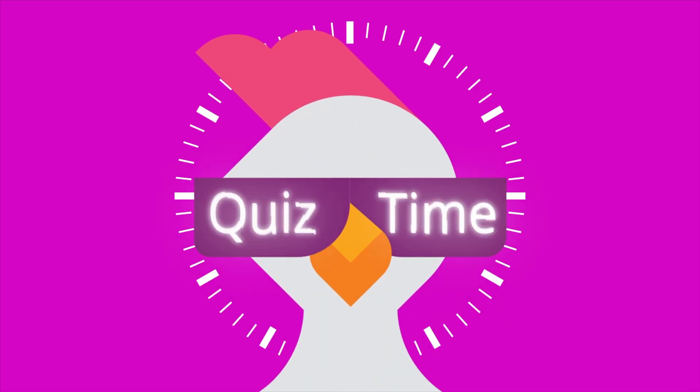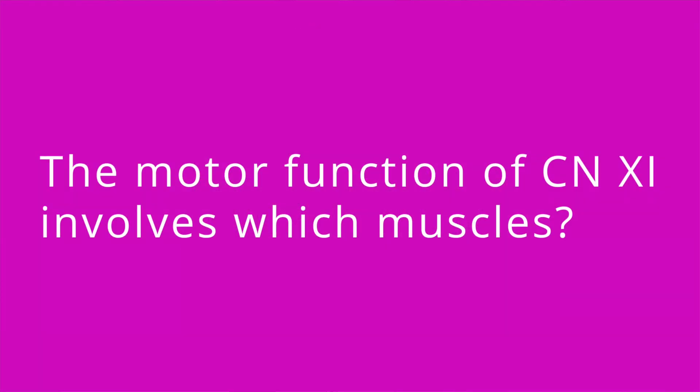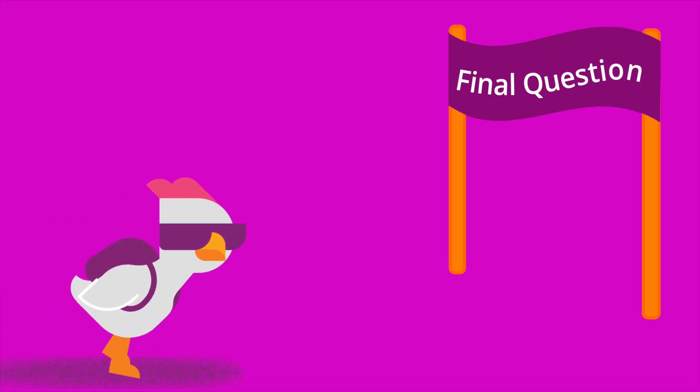That is it for assessing cranial nerves 11 and 12, spinal accessory and hypoglossal. I'm so glad you stayed until the end because I'm going to give you some quiz questions to test your knowledge. The motor function of cranial nerve 11 involves which muscles? Sternocleidomastoid and trapezius. How should the nurse assess the function of cranial nerve 12? Have the patient stick out their tongue and move it side to side.